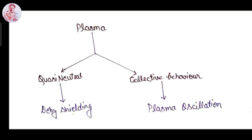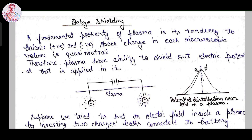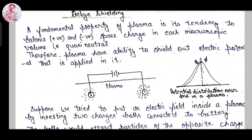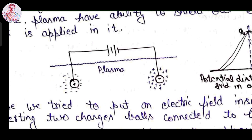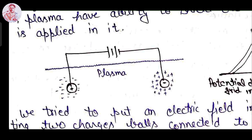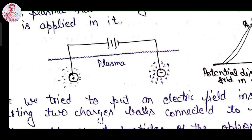Now we will discuss the concept of Debye shielding and the Debye sphere, and we will calculate and derive the formula for Debye length from the concept of quasi-neutrality. As we know, the fundamental property of plasma is quasi-neutrality — its tendency to balance positive and negative space charges in each microscopic volume element. Therefore, plasma has the ability to shield out the electric potential applied into it. Suppose we try to put an electric field inside a plasma by inserting two space charges connected with two balls — you can see in this figure that this is a plasma and we have connected an external battery.